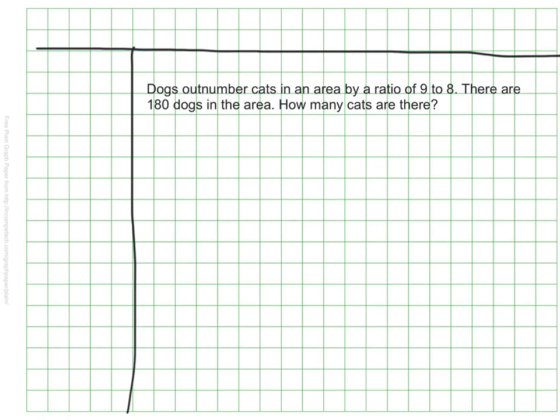Here's another proportion. Dogs outnumber cats in a particular area by a ratio of 9 to 8. There are 180 dogs in the area. How many cats are there?